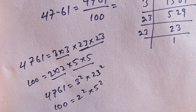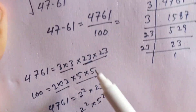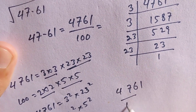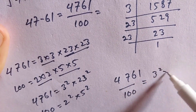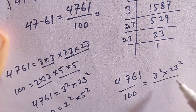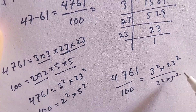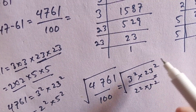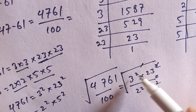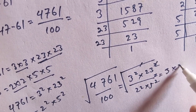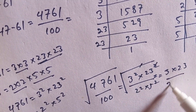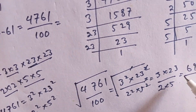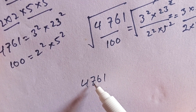And 100 is 2 squared times 5 squared. So we write 4761 over 100 as 3 squared times 23 squared divided by 2 squared times 5 squared. Taking the square root of both sides, we cancel the squares with the square roots, giving us 3 times 23 over 2 times 5, which equals 69 over 10.